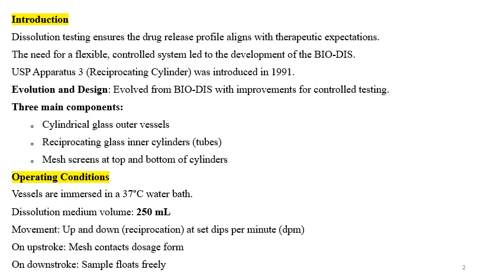Operating conditions for USP3 apparatus: vessels are immersed in a water bath at 37°C, and the dissolution medium volume is 250 ml. Movement is up-down at a set dips per minute — this up-down movement is reciprocation, which is why it is called the reciprocating cylinder. On the up-stroke, the mesh contacts the dosage form; on the down-stroke, the sample floats freely.